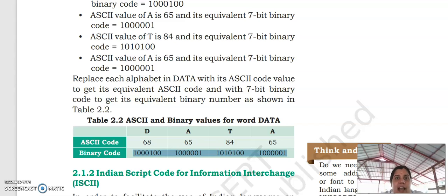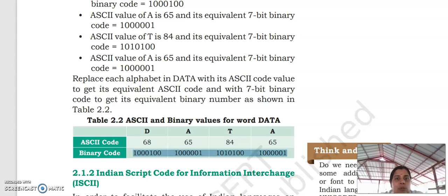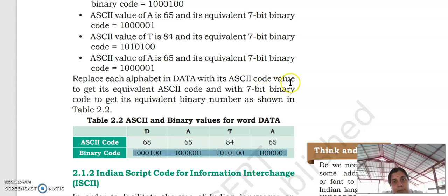So how can we calculate the number of characters? In ASCII, 7 bits are used — 2 raised to 7 equals 128 characters. In ISCII, 8 bits are used — 2 raised to 8 equals 256 characters are possible. Next is Unicode — we will explain Unicode in the next class. Thank you and have a nice day.